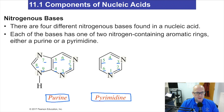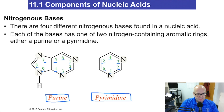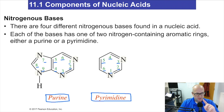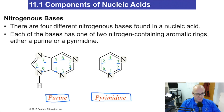There are four different nitrogenous bases found in nucleic acids. Each base has one of two nitrogen-containing aromatic rings — either a purine or a pyrimidine. There are four bases, but they're grouped as purines or pyrimidines. Those are the classes of the bases we're going to talk about. Just stuff you've got to know — unfortunately, it's just memorization right now.